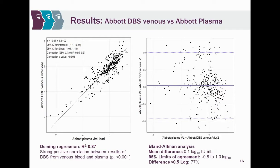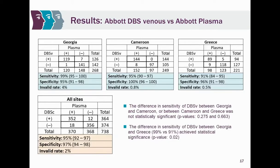Results for venous blood DBS — collected directly as whole blood posted to filter paper — were very similar. There is a strong linear correlation between plasma and venous blood DBS, with a mean difference of approximately 0.1 log, and most results had a difference below 0.5 log. Sensitivity and specificity for venous DBS showed exactly the same trend as capillary, with Greece showing slightly reduced sensitivity. Overall across all sites, sensitivity was 95% and specificity 97%, with a very low invalid rate.